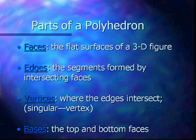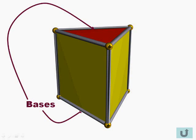Then we have bases, which are the top and bottom faces. So that's a special name for these particular faces. So the red that you see on top and that you cannot see on the bottom would be the bases for this prism.